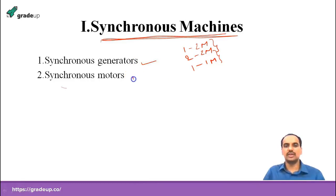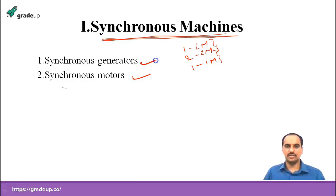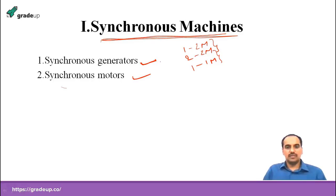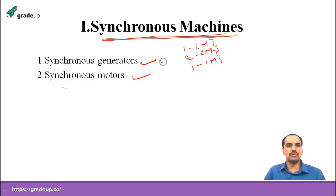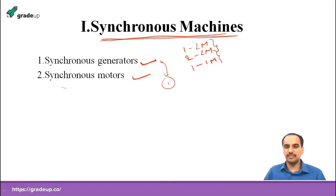The sub-topics in synchronous machines are: first, synchronous generators, and next, synchronous motors. Coming to synchronous generators, we need to look at types of generators, then how to find the performance — meaning efficiency as well as voltage regulation. For voltage regulation of a cylindrical type synchronous machine, there are four methods: the synchronous impedance method, MMF method, Potier triangle method, and the ASA method, which is the advanced method. Mostly we will go for the Potier triangle method. Based on this topic, we can expect one question on voltage regulation of synchronous generators.